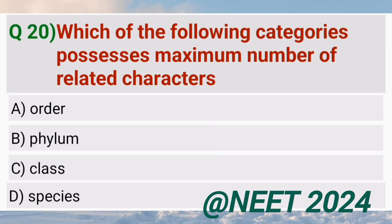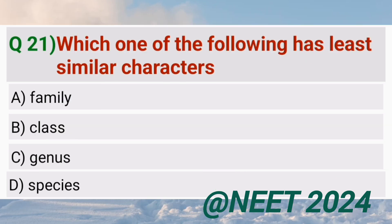Which of the following categories possesses the maximum number of related characters? Species. Which one of the following has the least similar characters? Class.